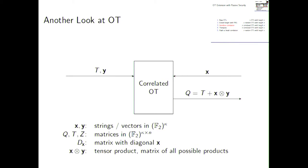And if you don't see it right away, you just have to believe me that this is true. So now, going again from standard OT to correlated OT, we actually found that D_X Z then turns into the tensor product of X and Y. And by that, we mean this is a matrix that contains all the possible products of all the possible entries of the strings X and Y.